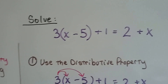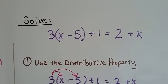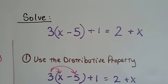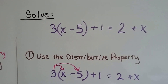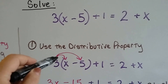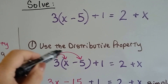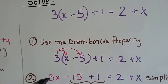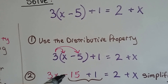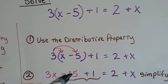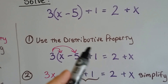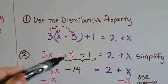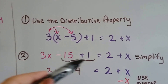So if this is our equation — 3(x minus 5) plus 1 equals 2 plus x — we can use the distributive property to start solving it. The first thing we do is distribute the 3: 3 times x and 3 times negative 5. That gives us 3x minus 15. We continue adding the rest of the equation to get our new equation.